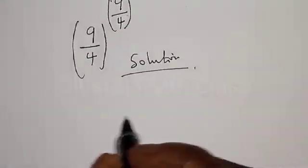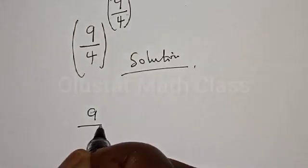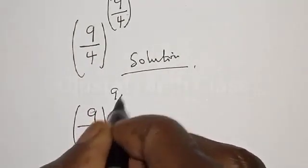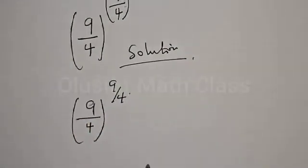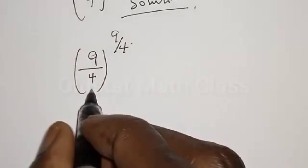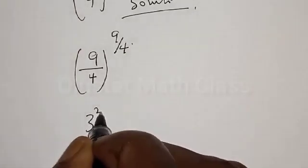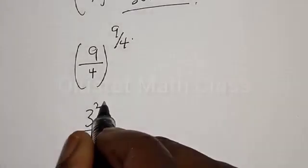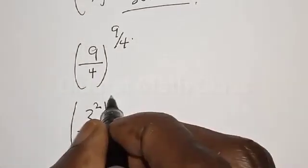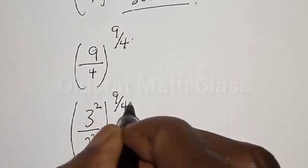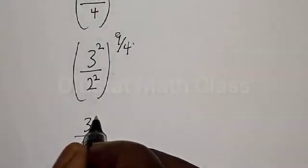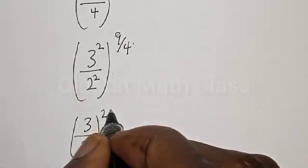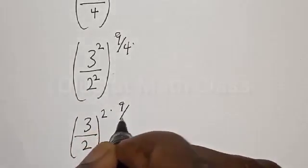We have 9 over 4 raised to the power 9 divided by 4. This can be expressed as 3 squared divided by 2 squared, raised to the power 9 divided by 4, which gives us 3 divided by 2, all squared, then multiplied by 9 divided by 4.